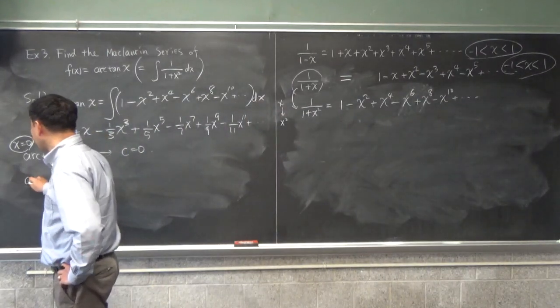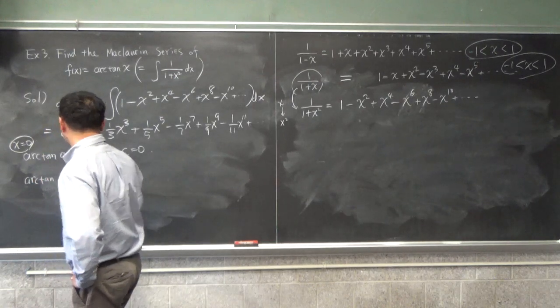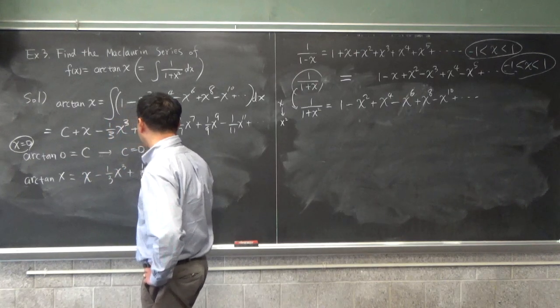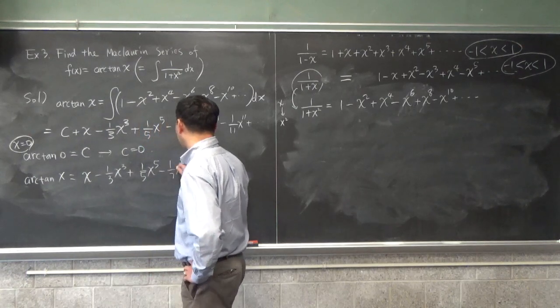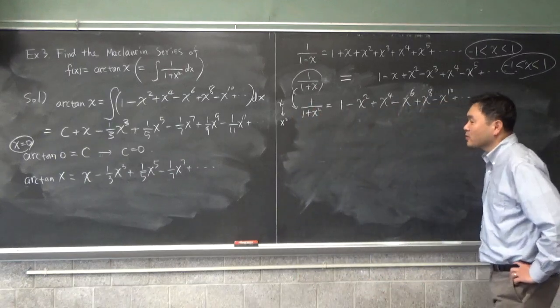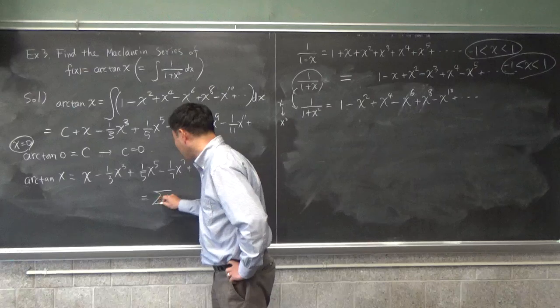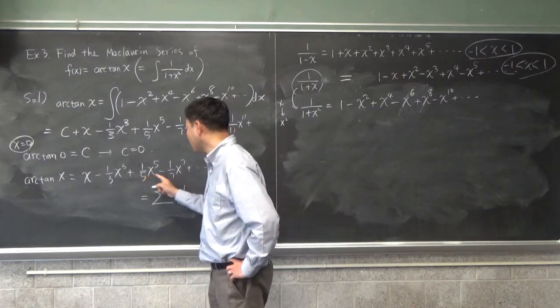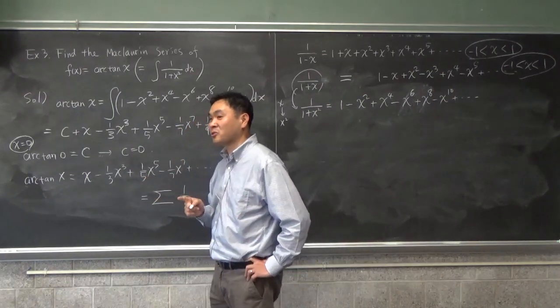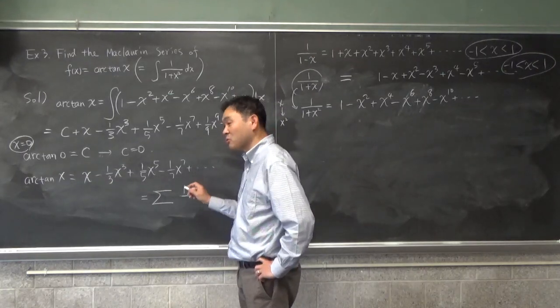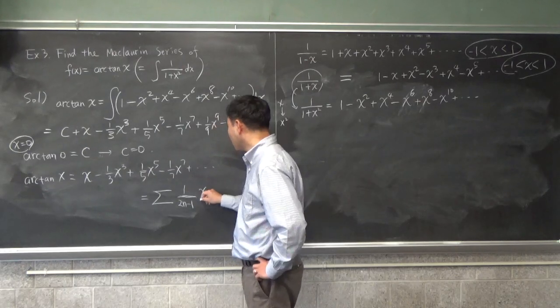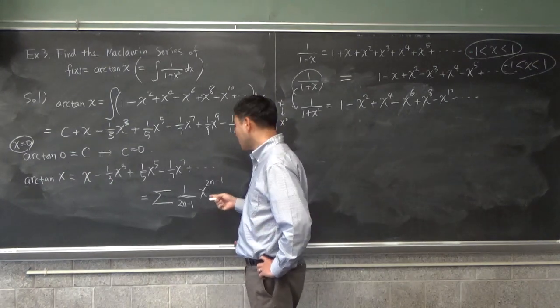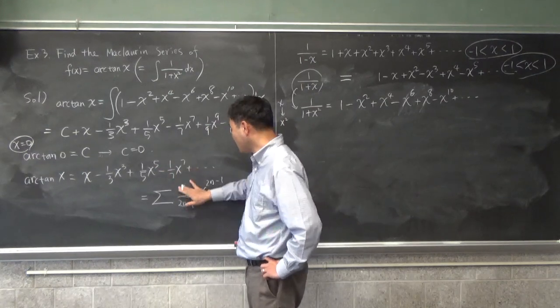And then you plug in zero. X equals to zero both sides to figure out what c must be. So the arctangent of zero is c. But arctangent of zero is zero. So c must be zero. So it's a really simple answer. The answer is that arctangent of x is x minus 1 3rd x cubed, plus 1 5th x to the 5th minus 1 7th x to the 7th. Now what's the answer in terms of sigma notation?